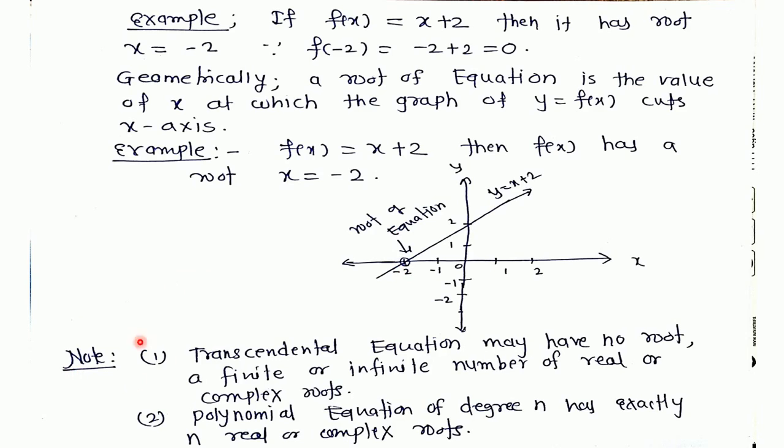Please note two important points: transcendental equations may have no roots, a finite or infinite number of real or complex roots. But polynomial equations of degree n have exactly n real or complex roots. This is the main difference between transcendental and polynomial equations related to roots.